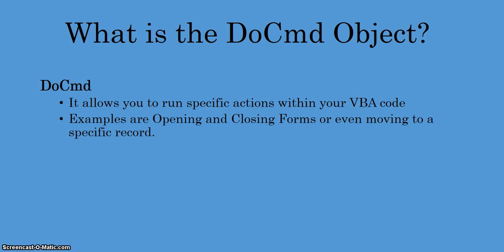In order to open or close a form, we're going to be using the DoCmd object. What does the DoCmd object do? It allows you to run specific actions within your VBA code. Examples include opening and closing forms or even moving to a specified record.